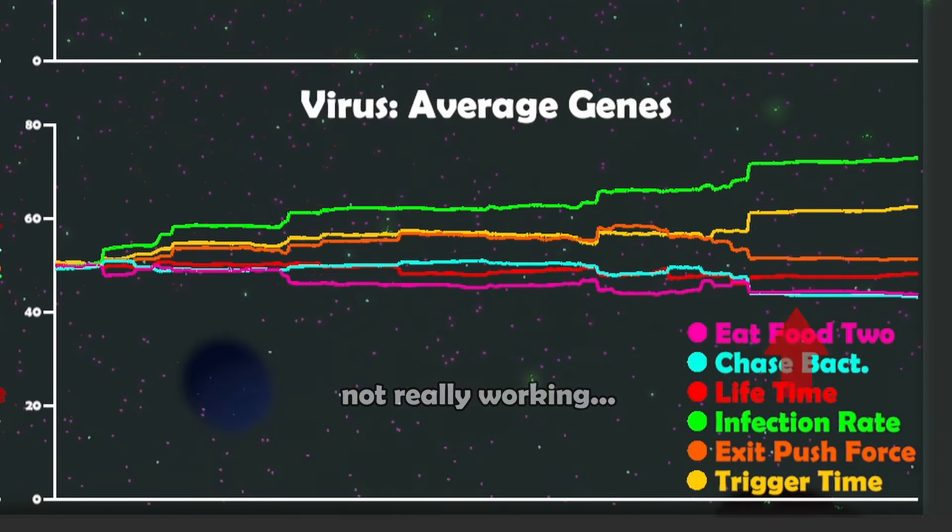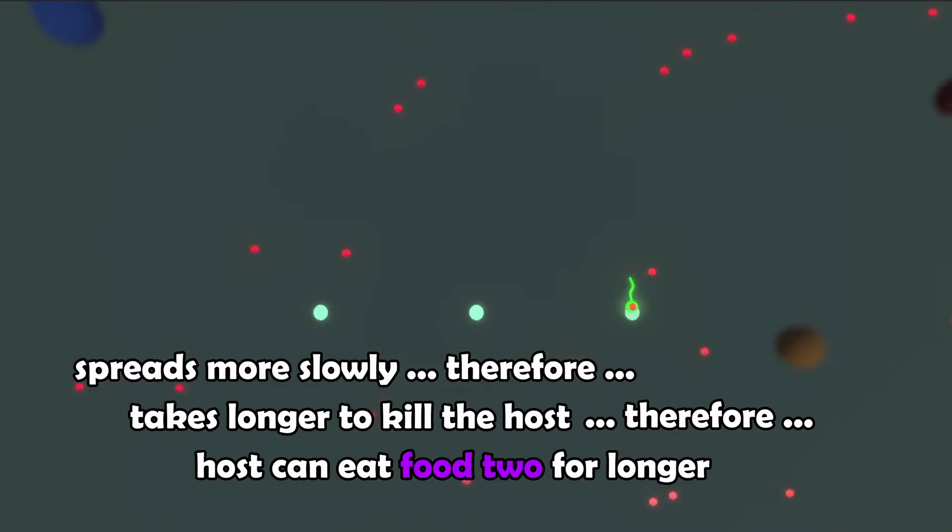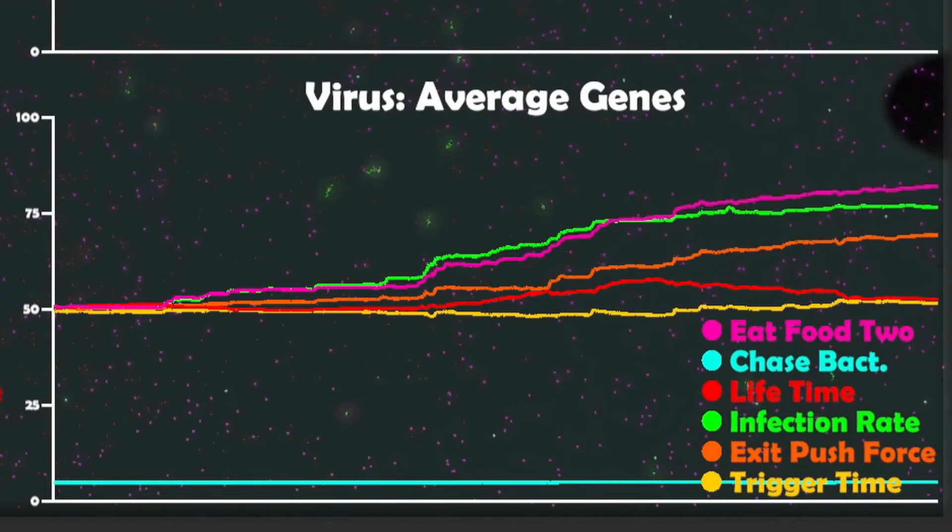And I think that was because the virus was multiplying and then killing the host so fast that the added benefit of being able to eat this extra food didn't really have a chance to show itself. So I made it such that the virus spreads much more slowly in the host bacteria. And I could see it happening, but it took a lot of time.